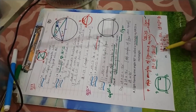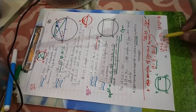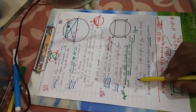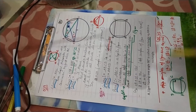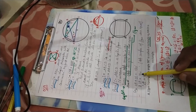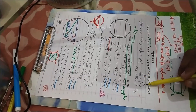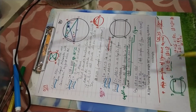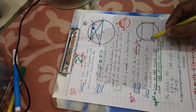Consider only one equation: angle A plus C equals 180°. Since angle A and angle C are both equal to each other (it is a parallelogram), it becomes 2 times angle A equals 180°. So 180 divided by 2 gives angle A equals 90°.